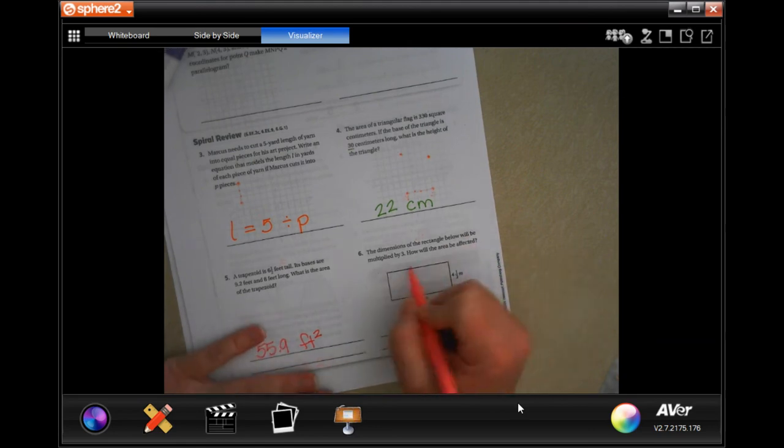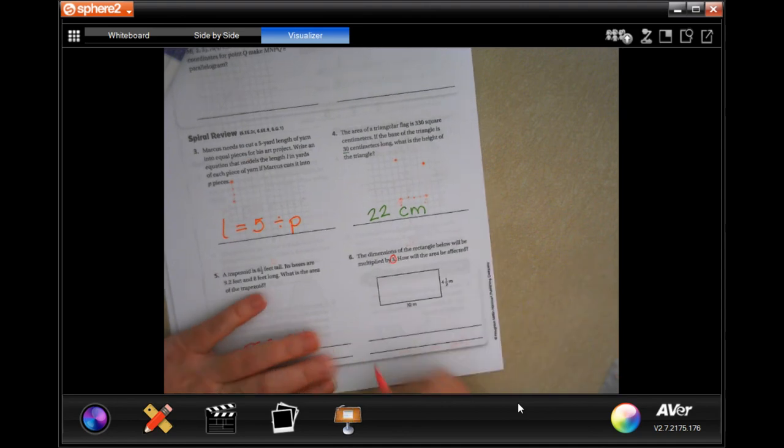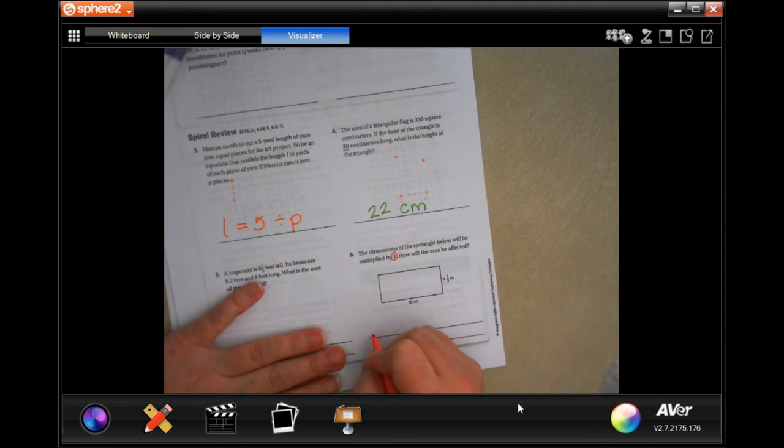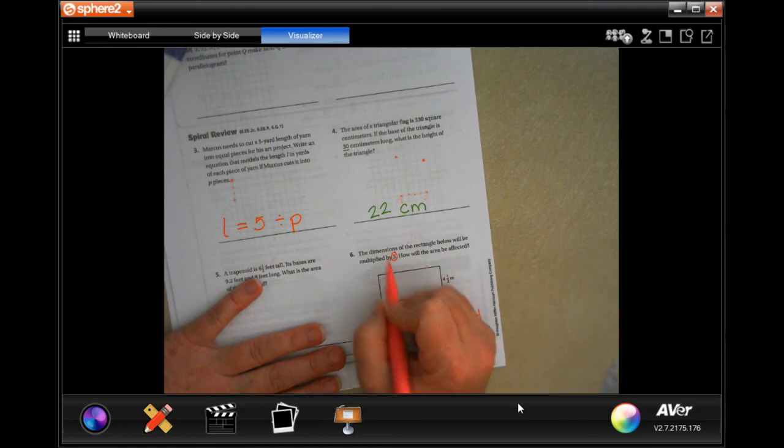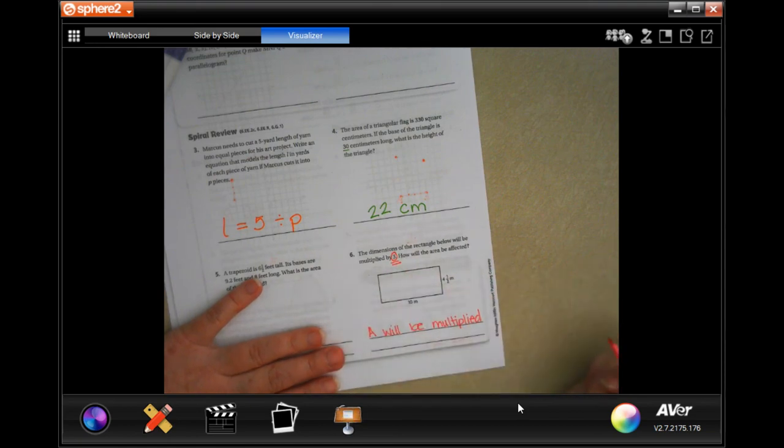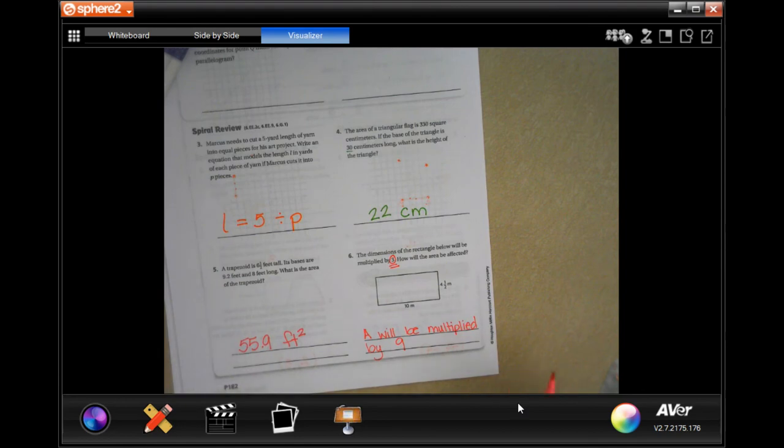Alright. The dimensions for the rectangle below will be multiplied by 3. How will the area be affected? Okay? Area will be multiplied. And remember from the last lesson, you're going to multiply that number by itself. So 3 times 3 is 9. Okay?